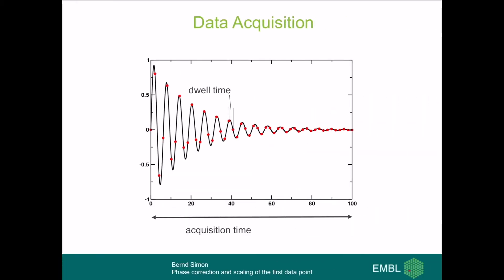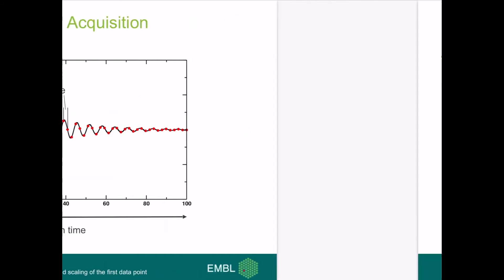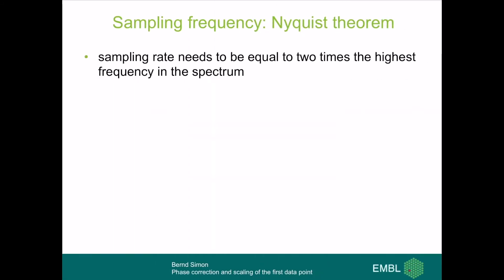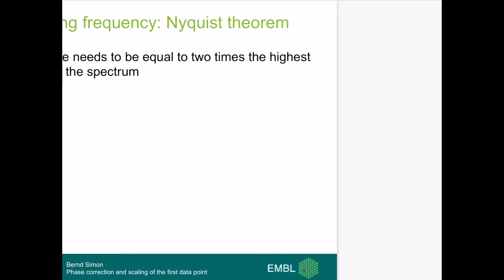The problem of phase correction is related to the way we perform data acquisition. We first talk about the data acquisition — namely what dwell time to choose and what sampling rate will be used. The minimum sampling frequency needed is given by the Nyquist theorem: the sampling rate needs to be equal to two times the highest frequency in our spectrum.